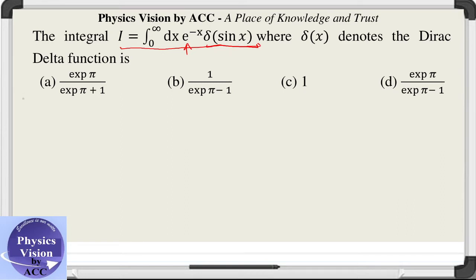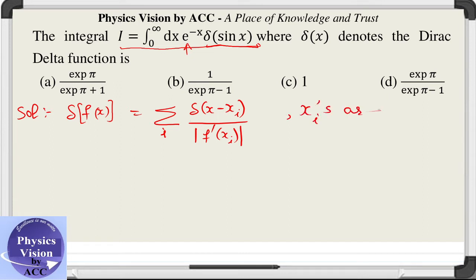So firstly we will make use of one very important property of delta function: that delta of f(x) can be written as the summation of delta(x minus xi) divided by the mode of f dash xi. What is this xi? These xi's are the roots of the equation. Roots means f(x) is 0, f(x) is 0 at this xi. And what is this? This is the derivative of the function, and we need to take the mode of it.